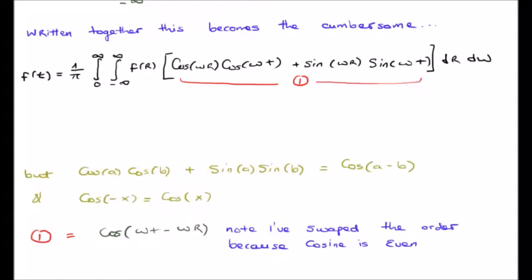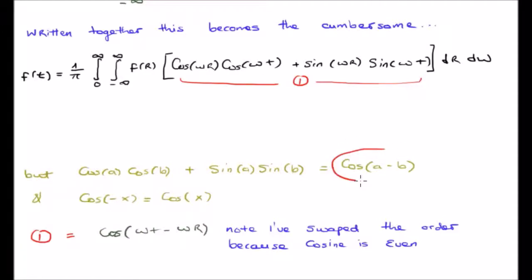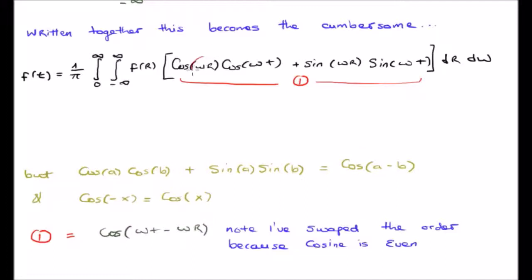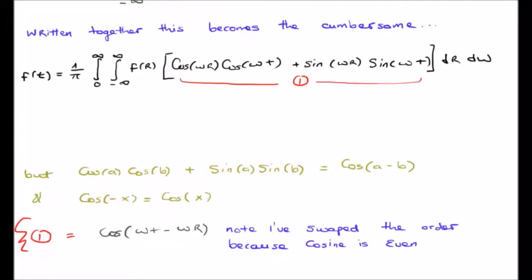The next step is to utilize a clever trigonometric identity. We note that we have the product of two cosines added to the product of two sines. This may be rewritten as the cosine of (a minus b), where a is omega times r and b is omega times t. Furthermore, cosine is an even function, which means I can change the order in the cosine — swap a and b — so that a is omega times t and b is omega times r. What this means is that expression one can be rewritten as cosine(ωt − ωr).